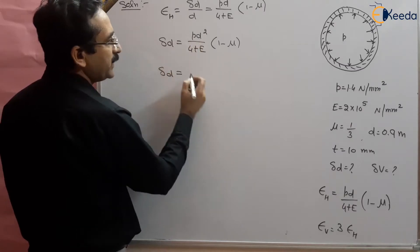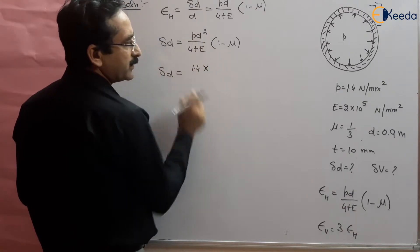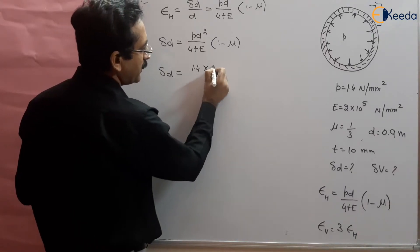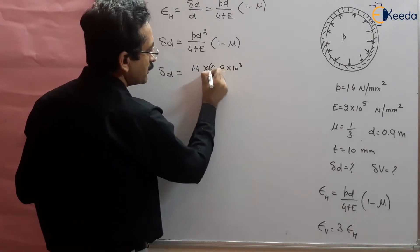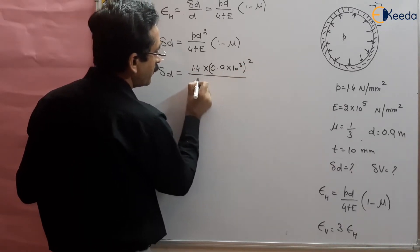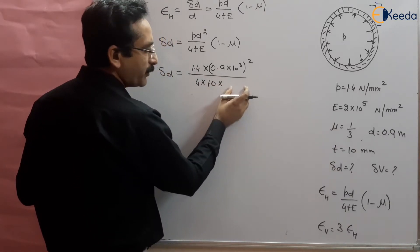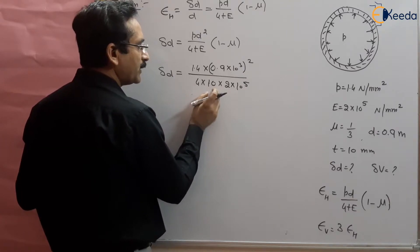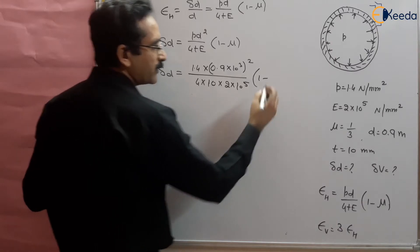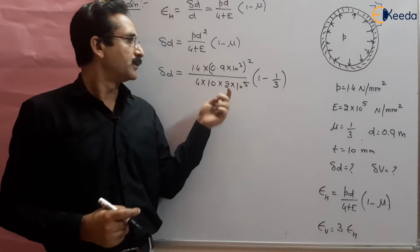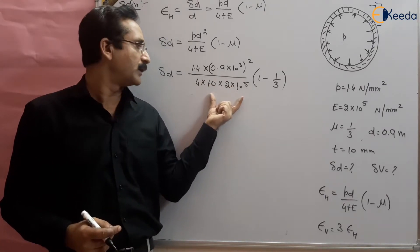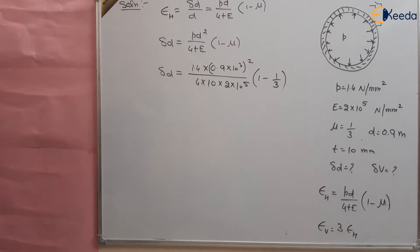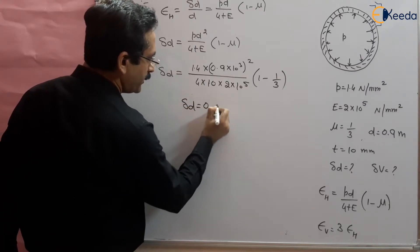What will be the change in diameter? Pressure P is 1.4 megapascal. Diameter d is 0.9 meter, which we convert to millimeter: 0.9 × 10³ mm, squared. Divided by 4 × thickness (10 mm) × E (2 × 10⁵ megapascal). The megapascal units cancel, so the answer comes in millimeter. Multiplied by (1 − μ), where μ = 1/3. Using a calculator with these values, the change in diameter of the spherical shell is 0.095 mm.